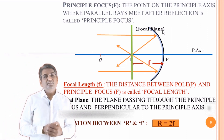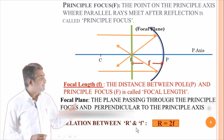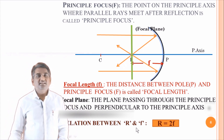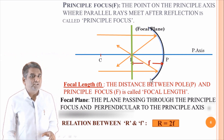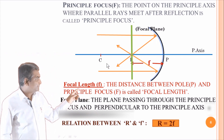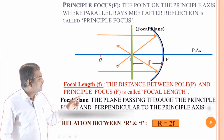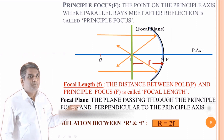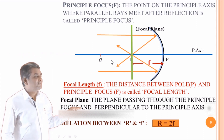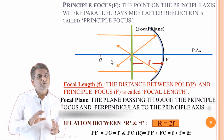Now the important conclusion is: what is the relation between the radius of curvature and focal length? The relation is R equals 2F. This means the distance from P to F is f, and the distance from F to C is also equal to f. And PC, which is the distance between pole and center of curvature — the radius of curvature R — equals PF plus FC, which gives R equals 2F. The full mathematical derivation will be covered in a separate session.